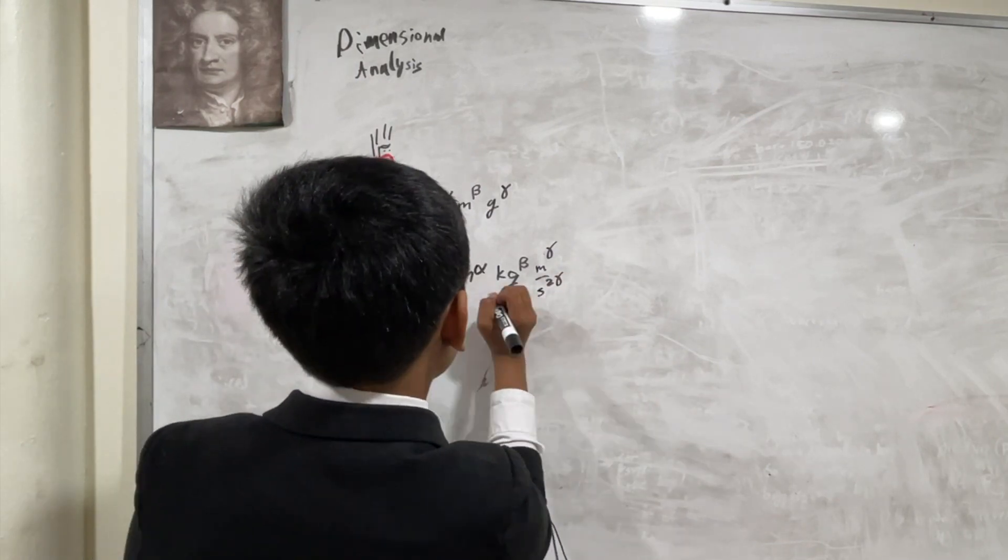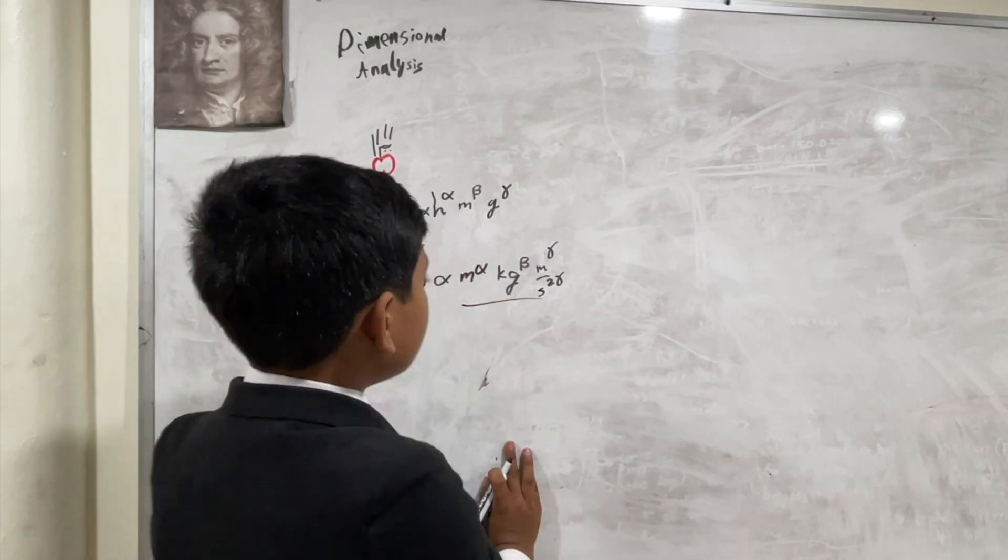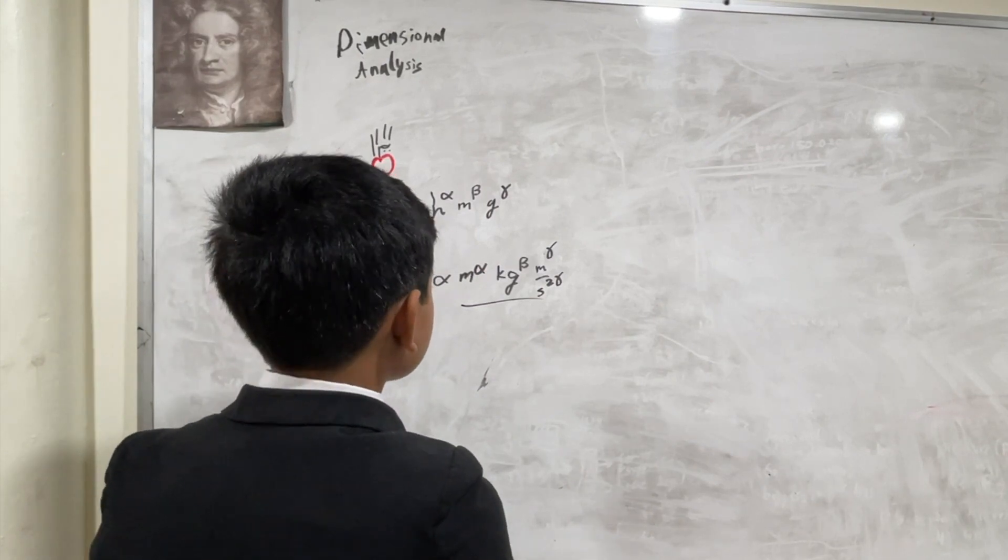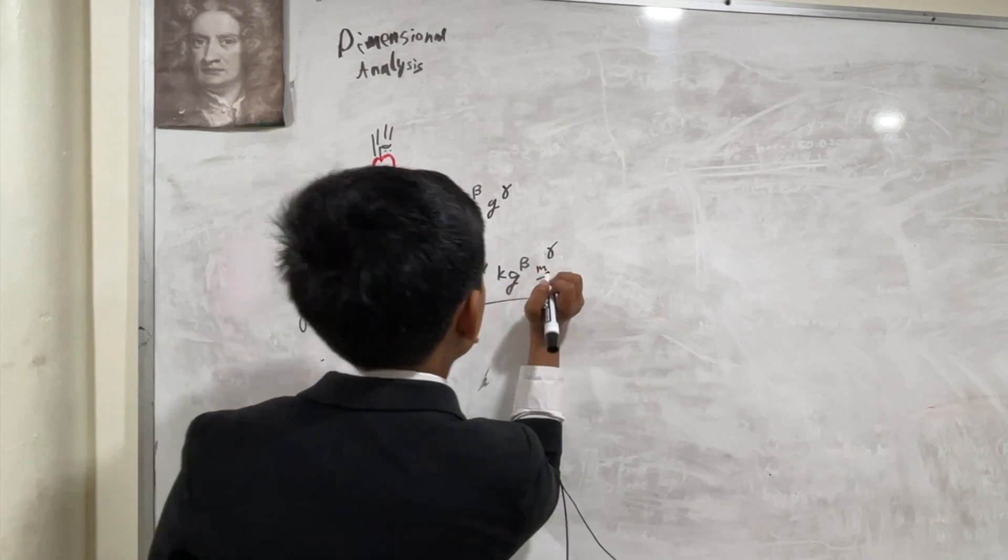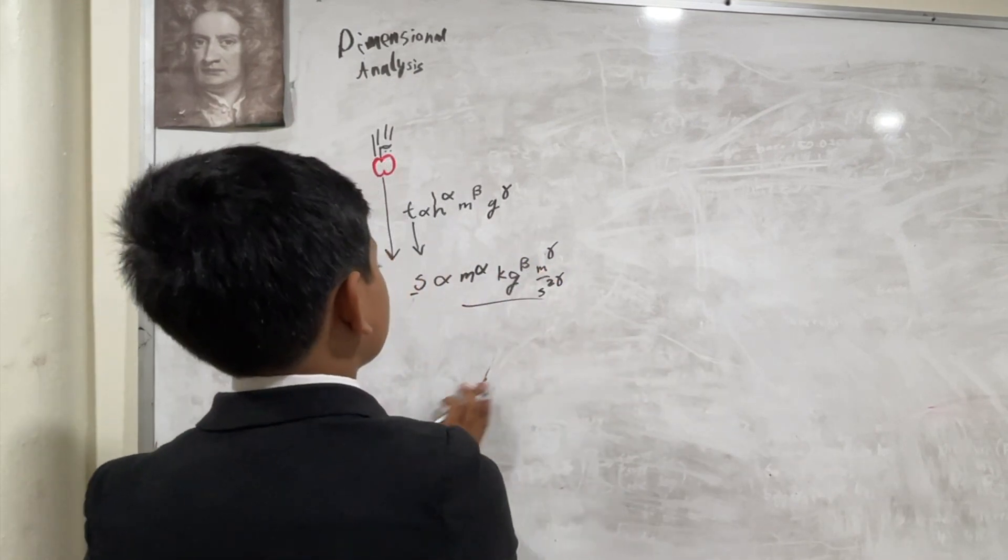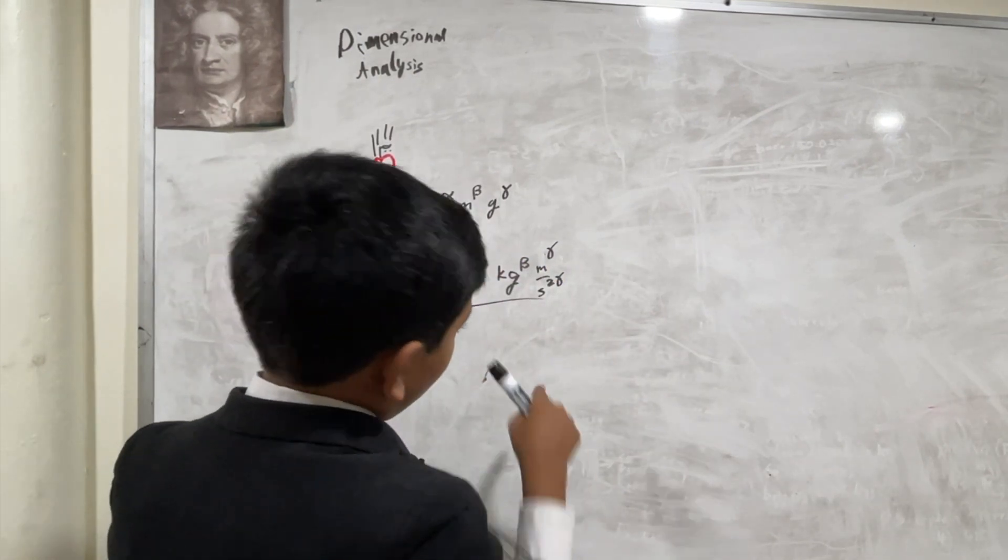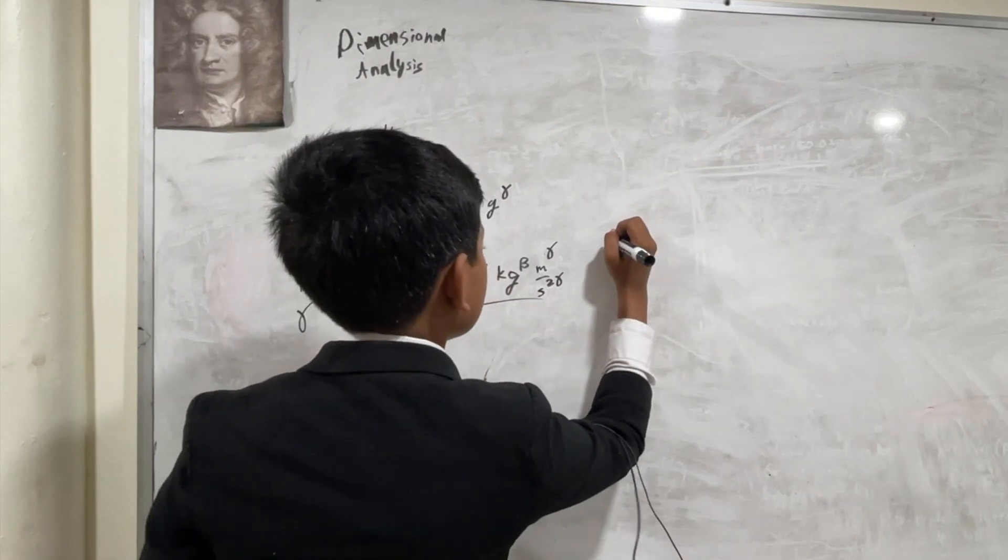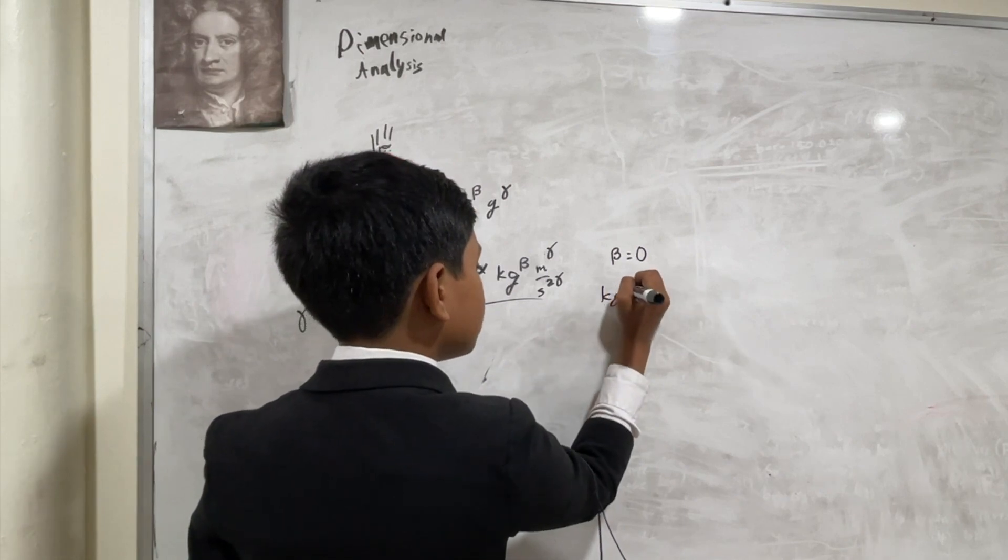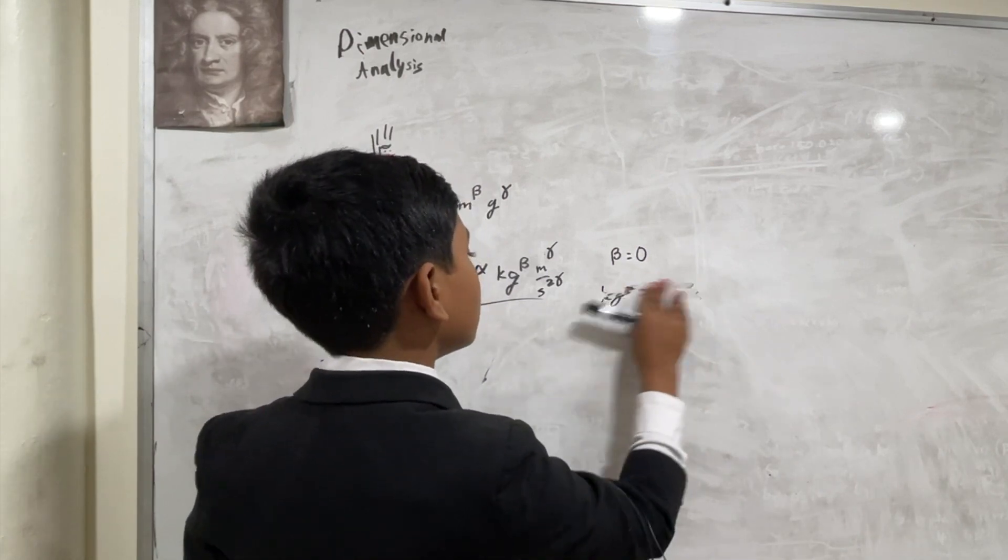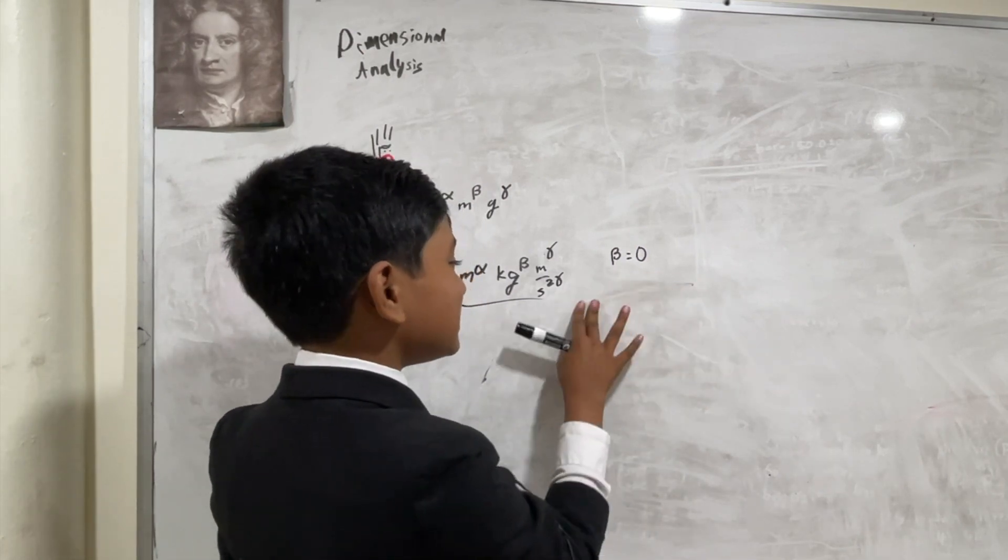So, we're trying to make both sides of this equation equal to each other. How do we do that? Well, first of all, there are no kilograms on the other side. So, you gotta go. So, that means that beta should be equal to zero. So, kilograms to the beta should be equal to one. So, it effectively just disappears.